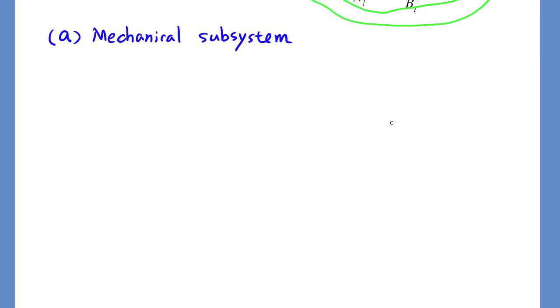Let's first work on mechanical subsystem. Draw the free body diagram, a motor and a robot arm. This is the right view of the system. Let's show all the external forces acting on each of these two gears.